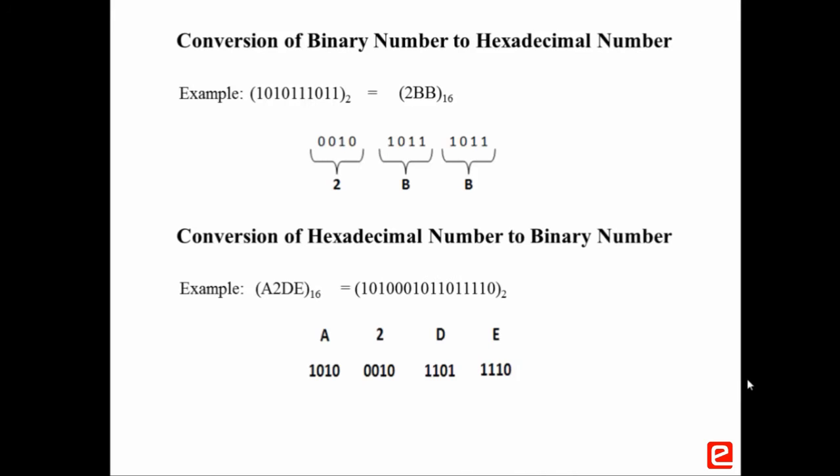To convert a hexadecimal number to binary: take each hexadecimal digit and obtain the equivalent group of 4 binary bits, then group them together. Consider an example: A3DE to the base 16. The equivalent binary will be 1010001111011110 to the base 2.